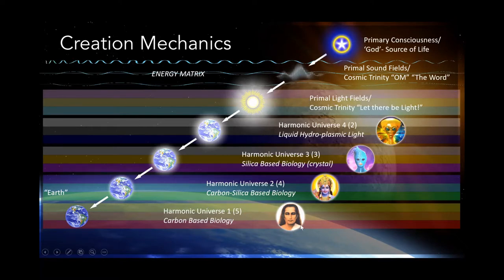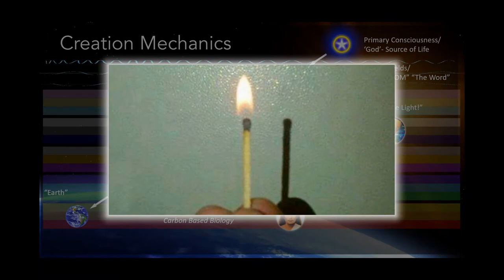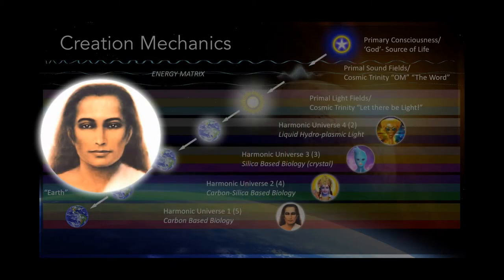Babaji, for example — people that have met him have noticed that he does not cast a shadow on the ground. That's because, similar to if you hold a candle flame against a wall with a light behind it, the flame itself doesn't cast a shadow. Light does not cast a shadow because it's light. So Mahavatar Babaji doesn't cast a shadow, and other avatars share this quality.